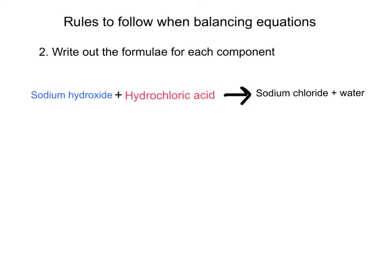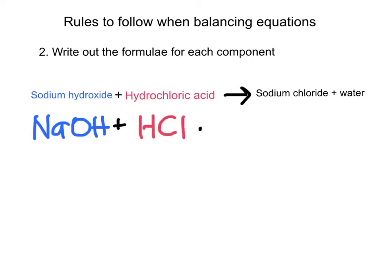So let's write out the formulas — for sodium hydroxide and hydrochloric acid. Sodium hydroxide is NaOH, and because sodium is a 1+ ion and hydroxide is a 1− ion, they are nicely balanced. We add hydrochloric acid, which is HCl, and this leads to the formation of sodium chloride, NaCl. Sodium is a 1+ ion and chloride is a 1− ion, so they balance by themselves.